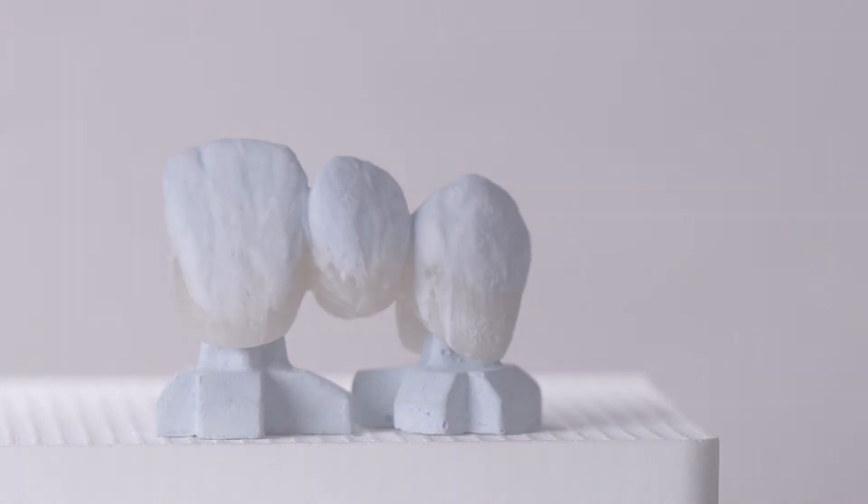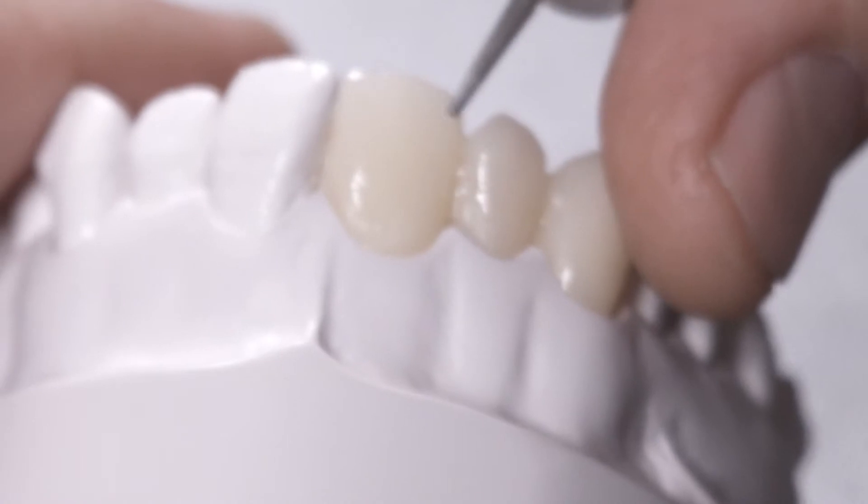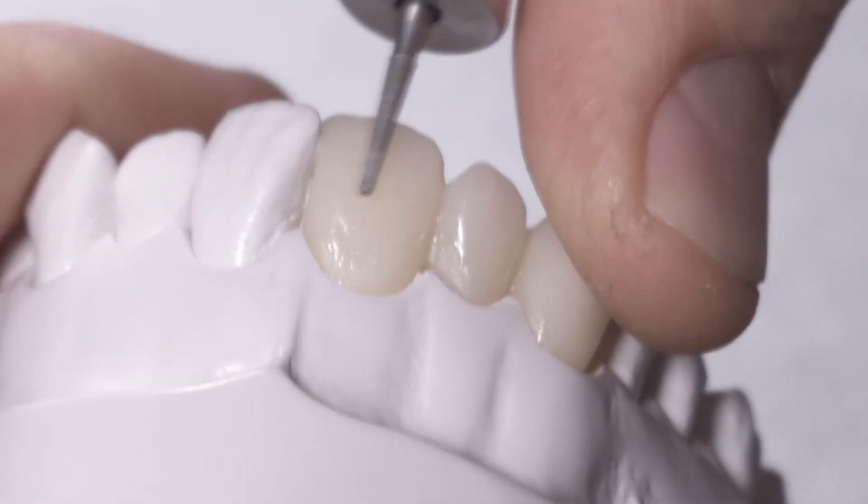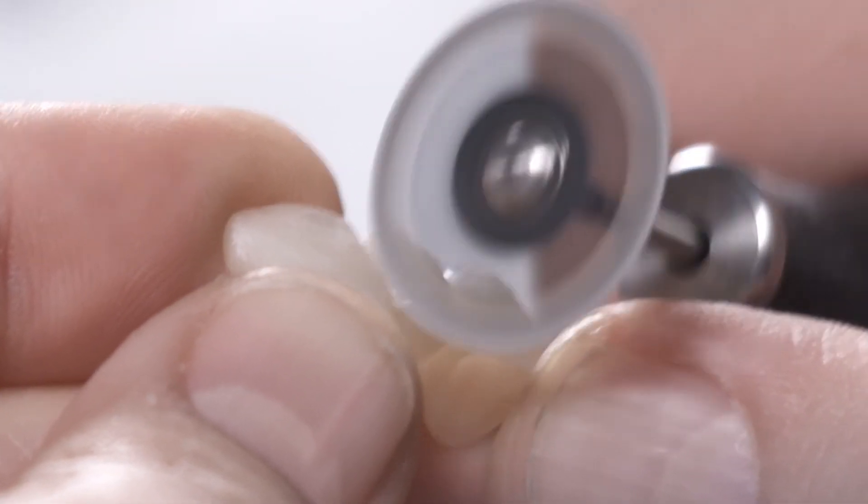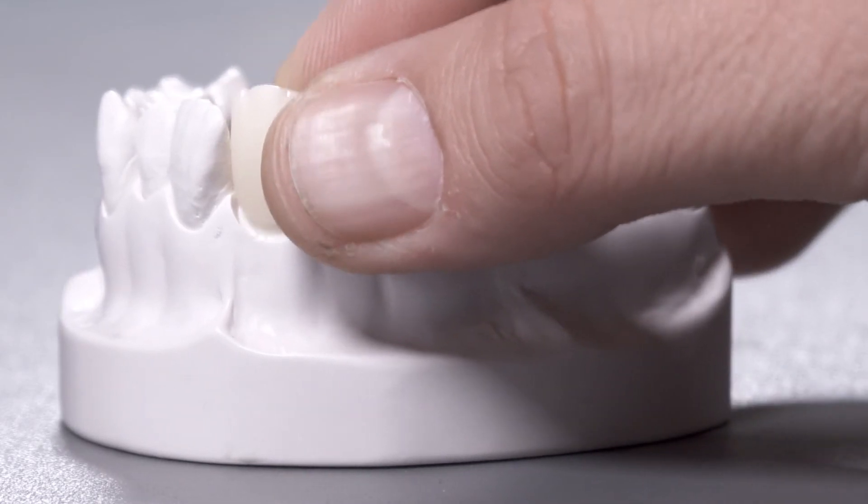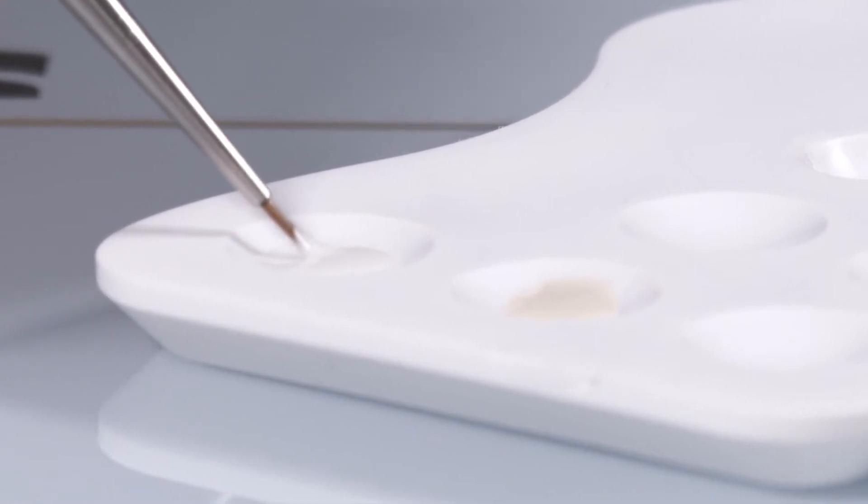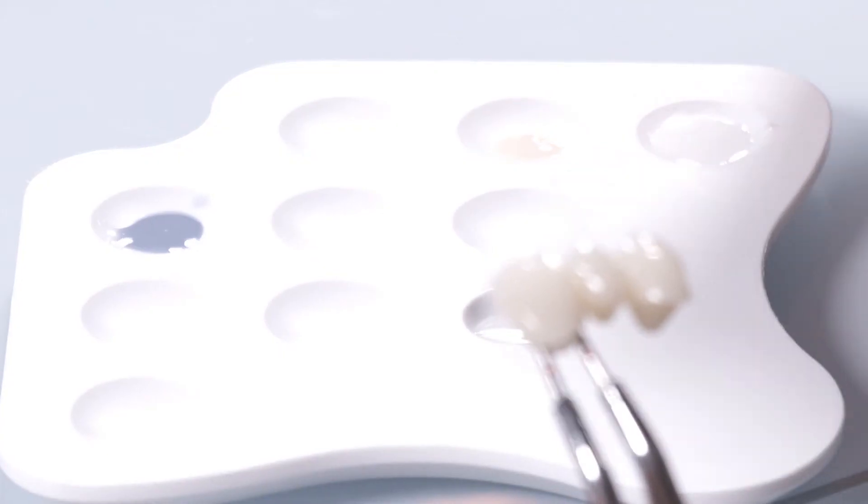After ceramic firing, finish the shape and surface texture. With this method, finalization with glaze and stain is achieved in a single step.